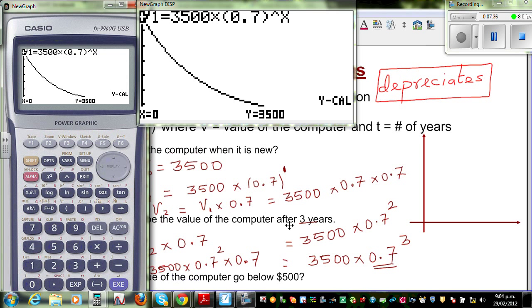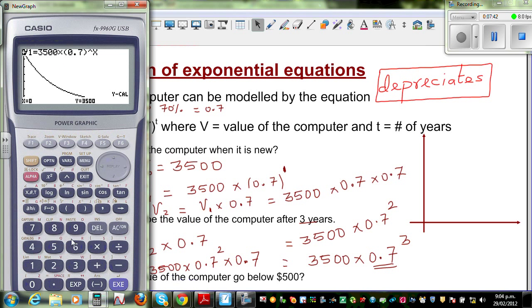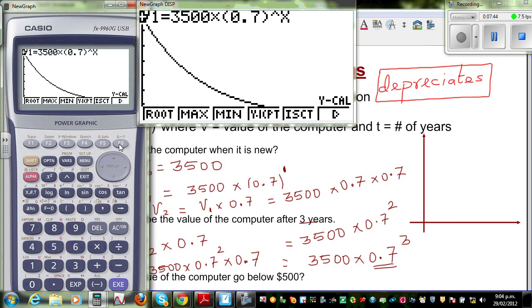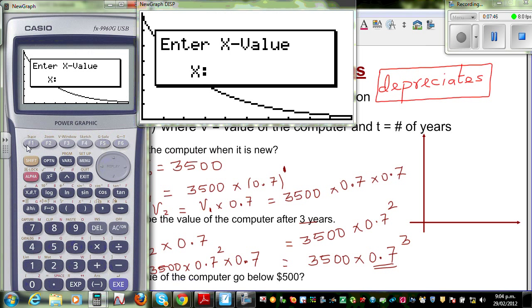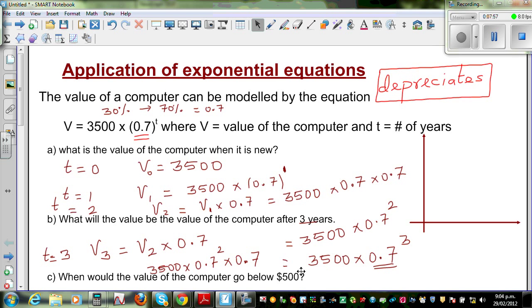So, the second question was, what's the value after 3 years? So, that would be, so again, G solve, y calc, and type in 3 years. And so, that's 1200.5. That's how you get this answer.